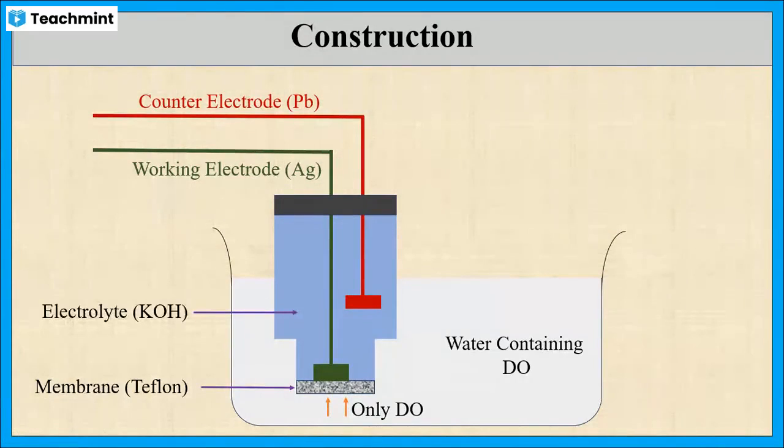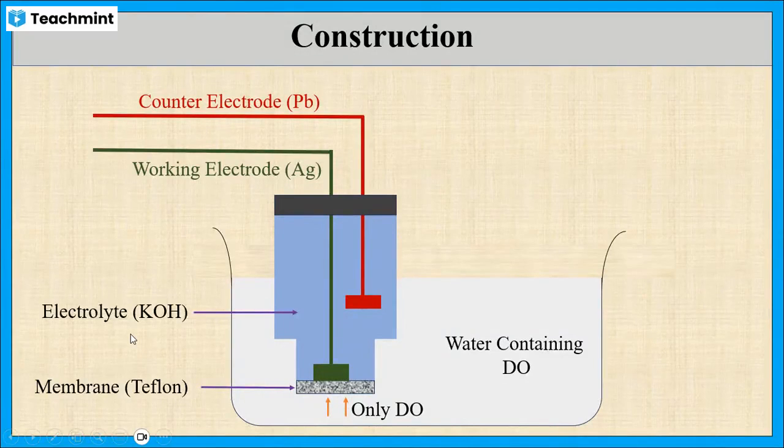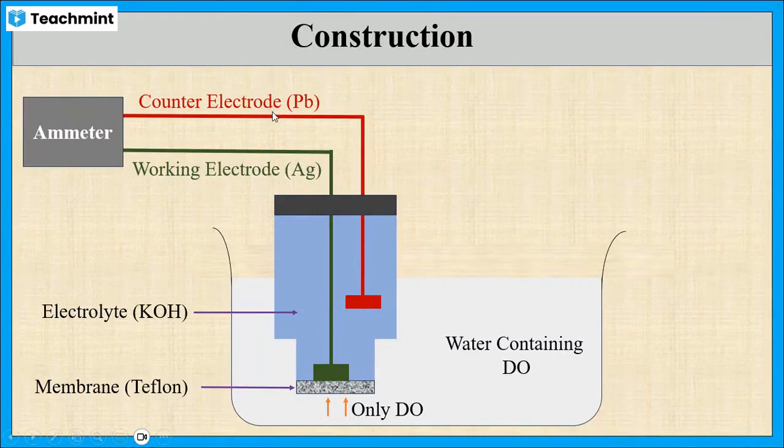These two electrodes are connected to ammeter. This is the construction of DO-sensor.